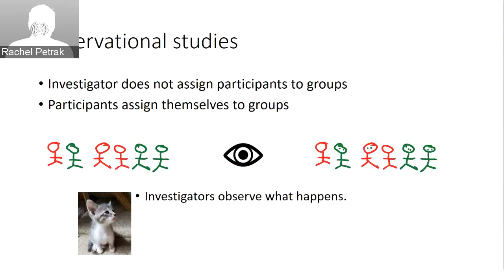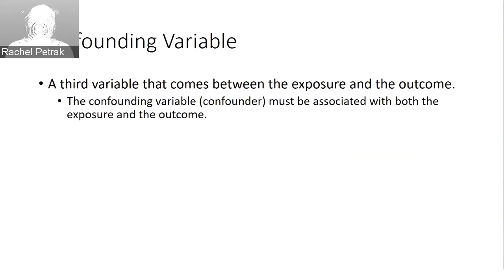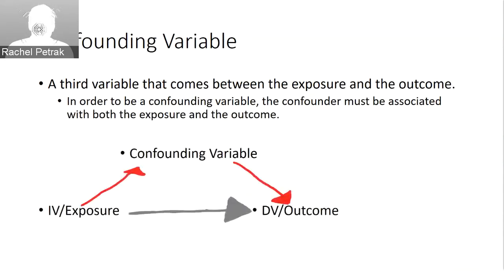This gets at an important idea in observational studies: the idea of a confounding variable. That's a third variable that comes between the exposure and the outcome. A confounding variable must be associated with both the exposure and the outcome. We can imagine a direct relationship between the exposure and the outcome, but another variable could also be associated with both, and we will see this in more than one of our review exercises.